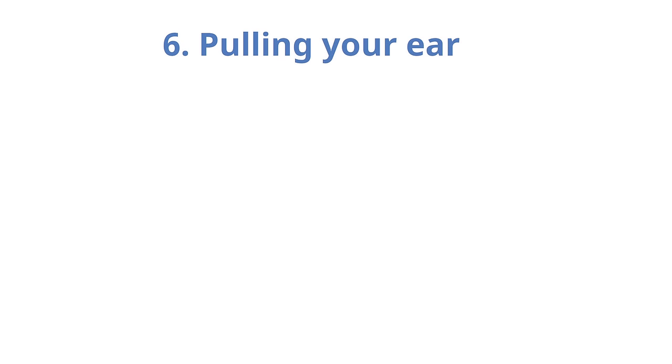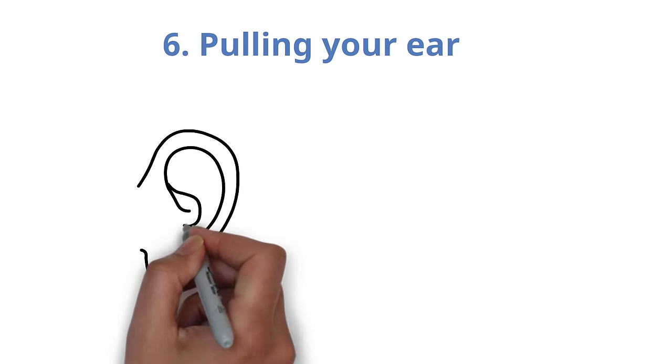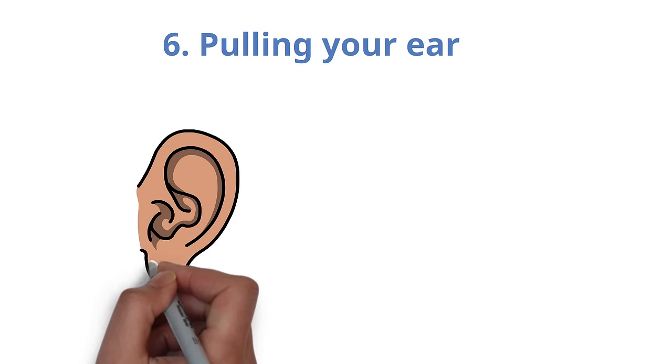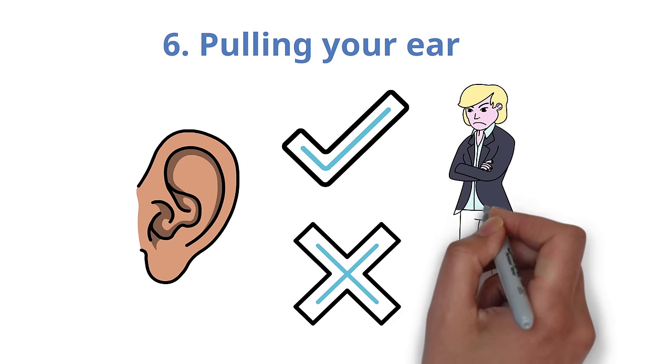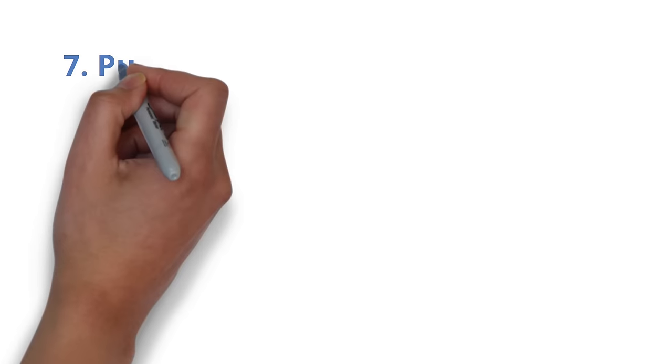Number 6. Pulling your ear. When you tug on your ear, you're indicating that you're attempting to make a decision but haven't yet. You have the appearance of being uncertain or noncommittal.